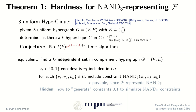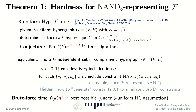With this, we obtain that the brute force running time of essentially n to the K is best possible under the three-uniform hyperclique assumption.